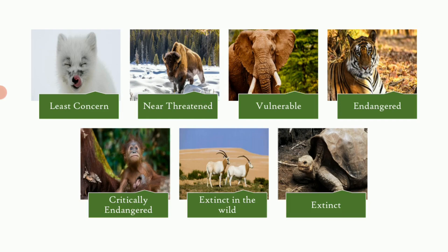The first of the seven main categories is 'least concern,' abbreviated as LC. Shown here is the arctic fox, and other examples include pigeons and domesticated animals. These species are not endangered or threatened — their population size has not been significantly reduced — and hence they are under the least concern category.